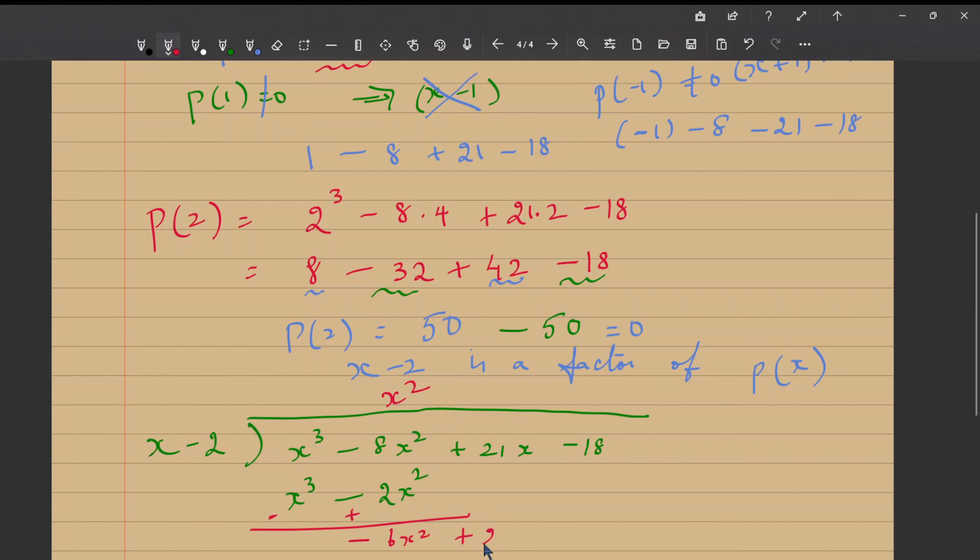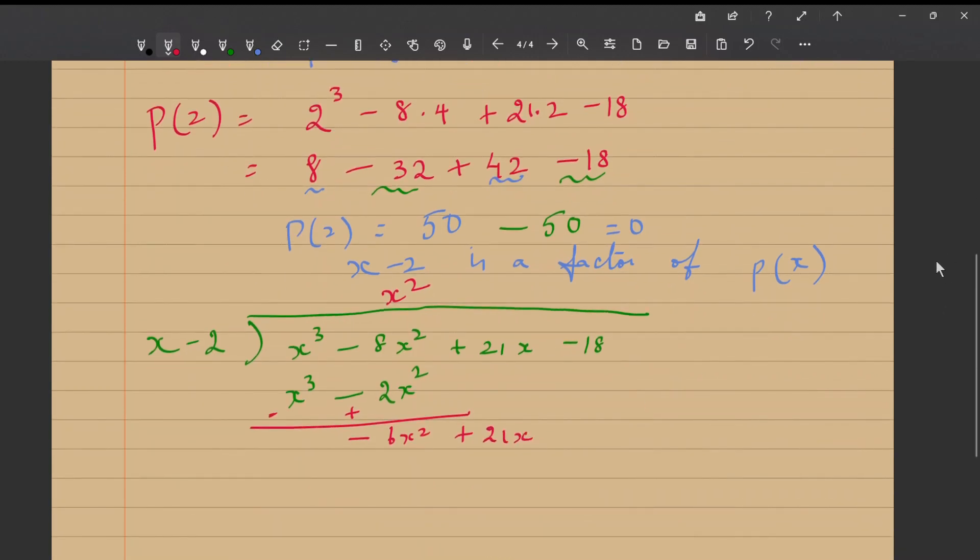And bringing the next term down, it is 21x. So now, what is x into what gives you -6x²? You get -6 into x. So -6 into x is -6x², minus into minus plus 12x, 6 × 2 are 12, 12x. So subtracting these two terms, we get this becomes plus and this becomes minus, since we are subtracting.